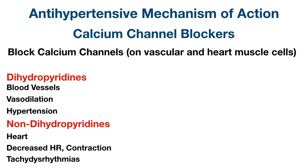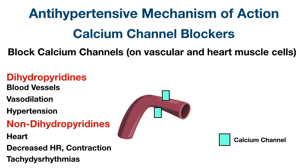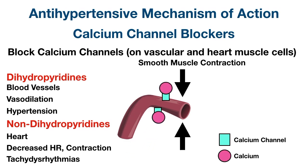There are calcium channels located on the smooth muscle cells of blood vessels. When calcium enters the cells through these channels, it leads to smooth muscle contraction and vasoconstriction, which causes blood pressure to increase.